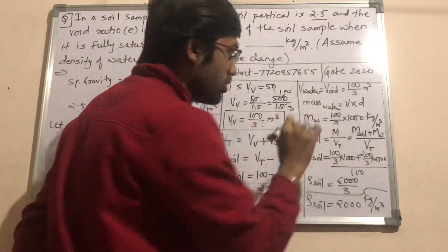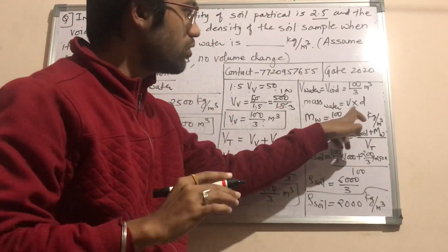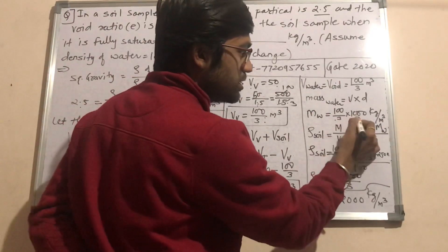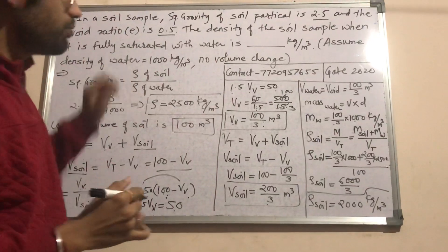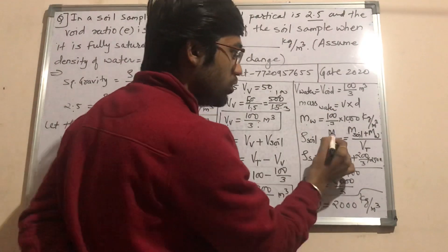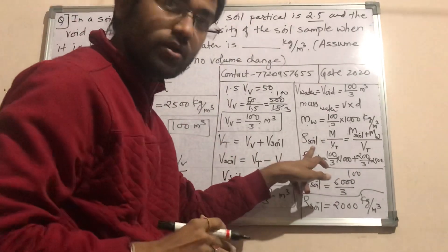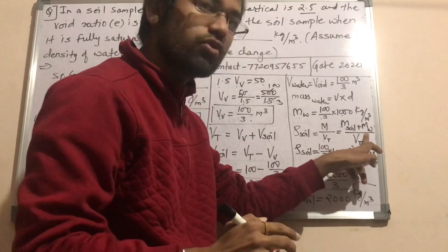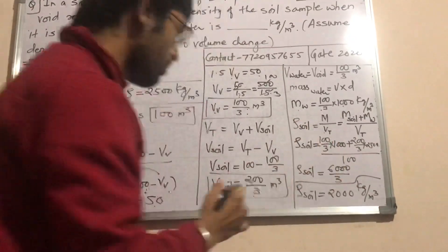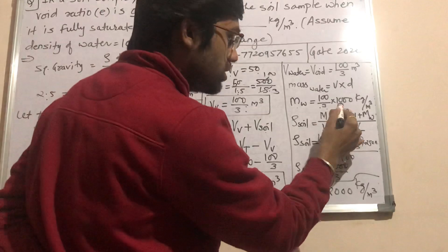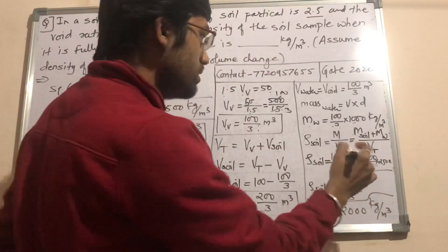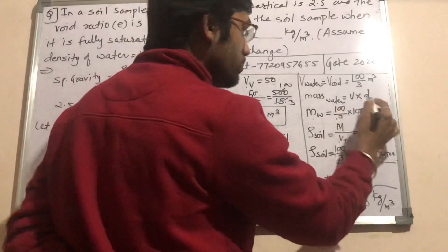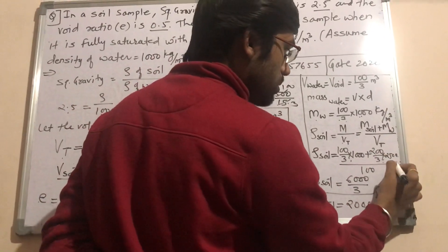Since the soil is fully saturated, volume of water equals volume of void, which is 100/3 meter cube. Now calculate mass of water: mass equals volume into density, so volume is 100/3 and density is 1000 kg per meter cube, giving mass of water as 100000/3 kg. You now have mass of water and total volume.